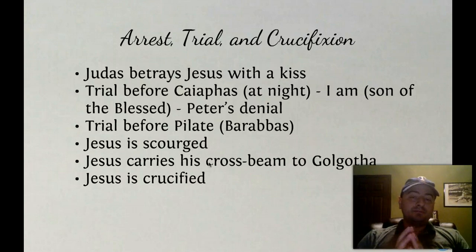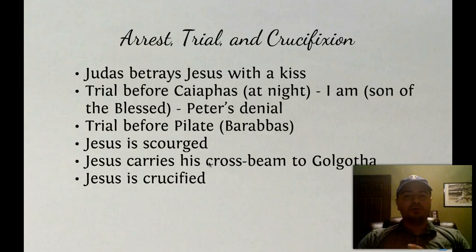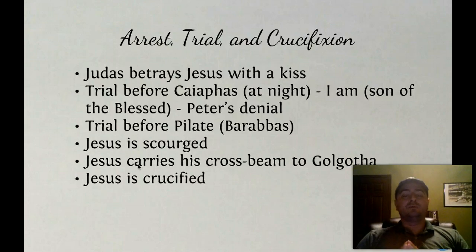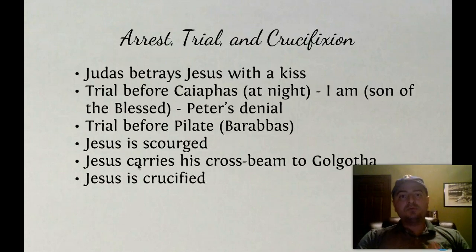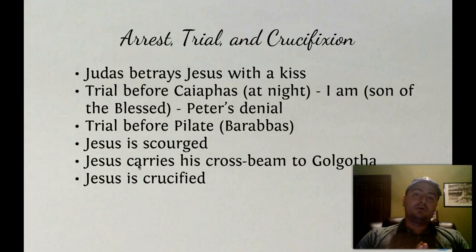Jesus is scourged with a whip that rips off most of the skin on his back and legs, and somehow he managed to carry his cross beam to Golgotha. The Romans were extremely good at crucifixion — they did it all the time. If you were crucified by the Romans, you were going to die. The people who scourged him were professionals who did it so that he had just enough life in him to die miserably on the cross — it's the ultimate form of Roman torture.